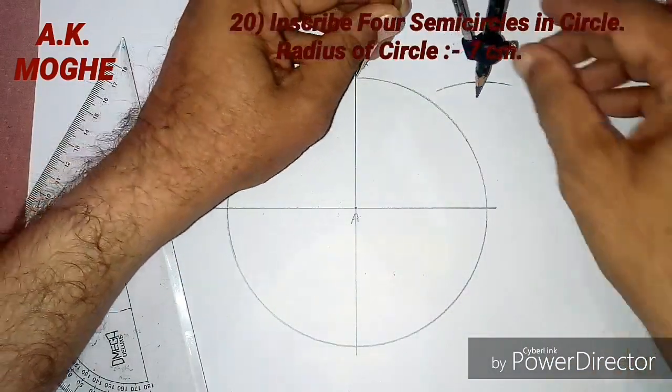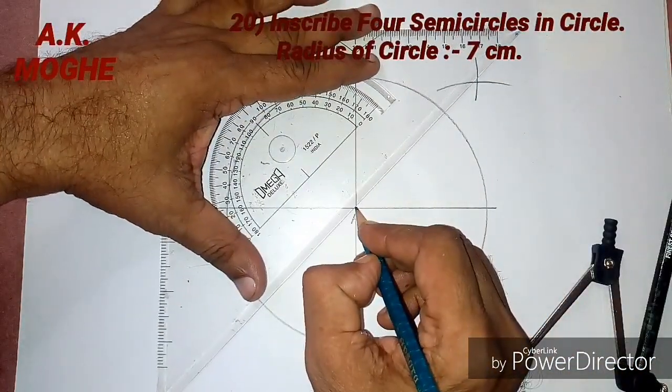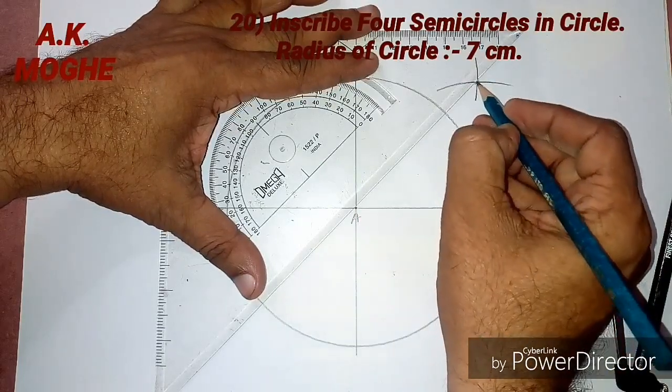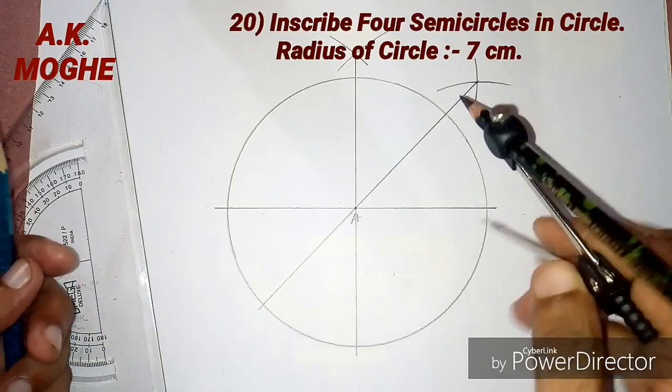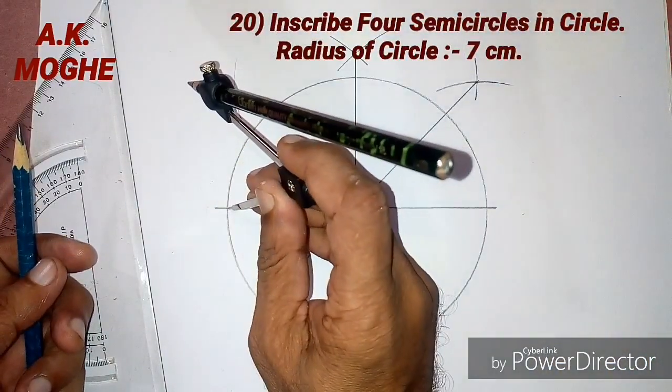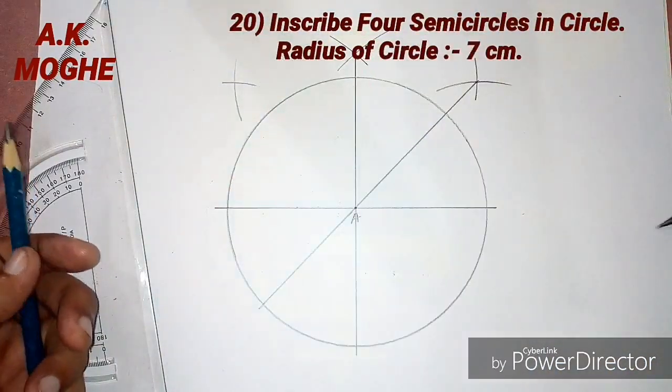Now we are proceeding to make 4 more parts of the circle. So we are going to divide the circle into 8 equal parts. Similarly, the second side.